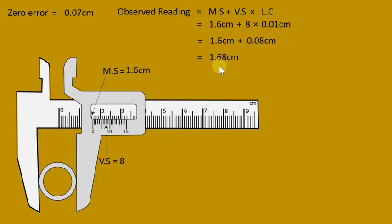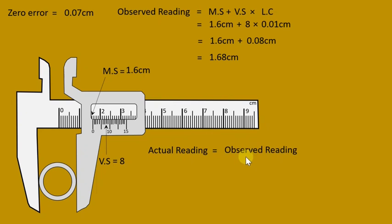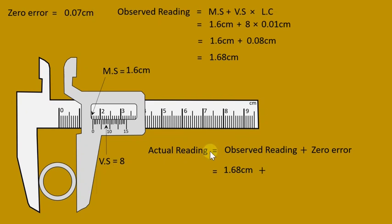This is the observed reading. This observed reading contains the zero error, so we need to find the actual reading. Actual reading = observed reading + zero error = 1.68 cm + 0.07 cm = 1.75 cm. That is the actual reading.